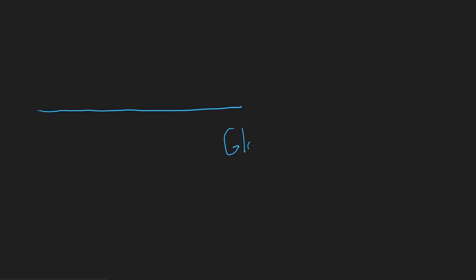Let's say this is glass and this is a vacuum. We know that when light moves from a vacuum into glass, light has different speeds in each of these materials. The speed of light in a vacuum, which we usually represent as C, is very, very high — it's the fastest thing in the universe. Light slows down when it reaches anything other than a vacuum.